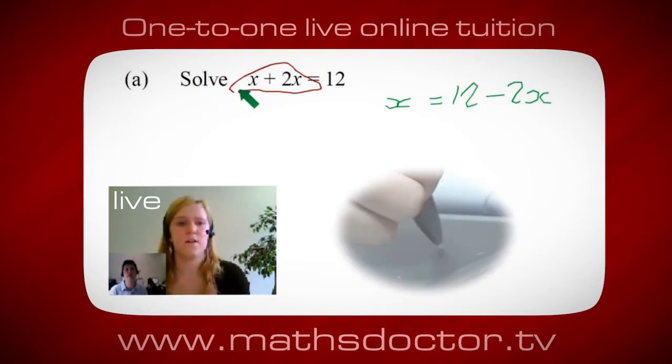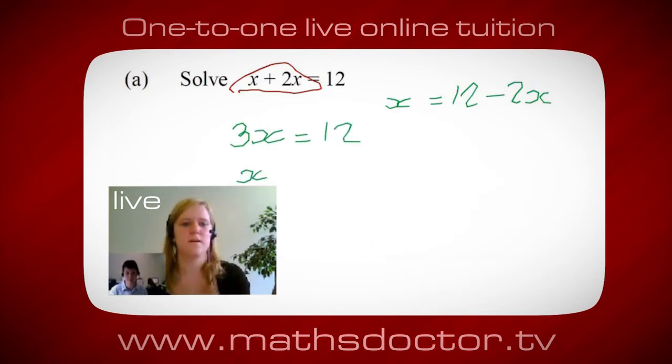Oh okay, it's 3x isn't it? Yeah, absolutely. So 3x equals 12. Oh! And so x equals 4. Brilliant! Spot on! Well done!